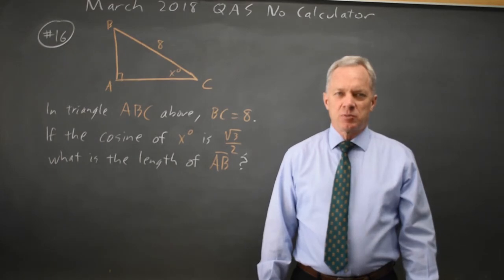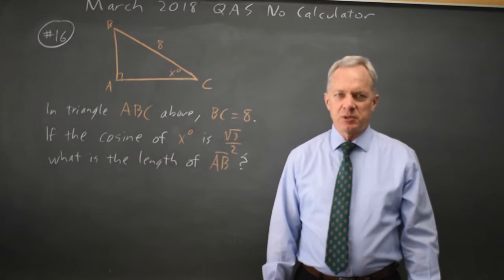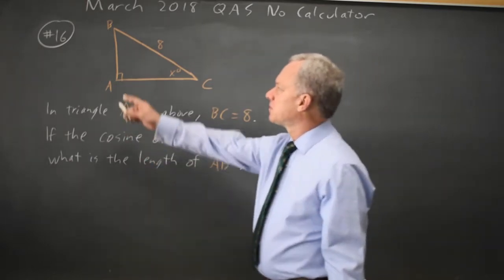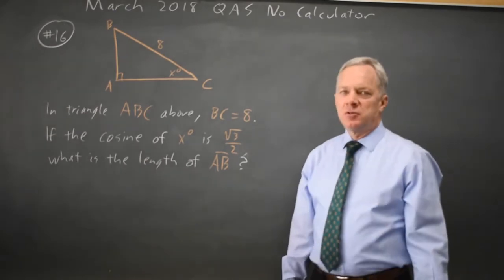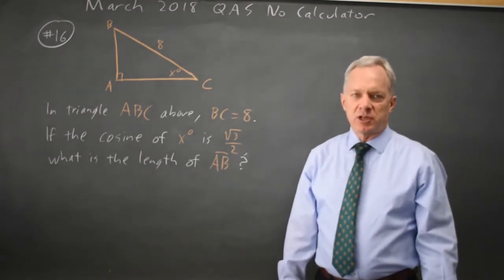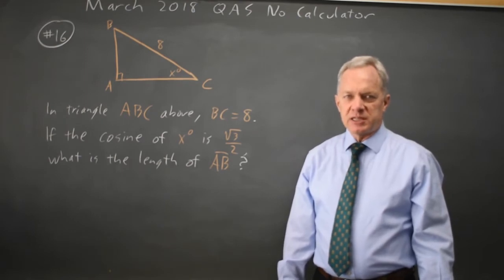This is question 16. College Board gives us the cosine of angle X and the length of the hypotenuse and asks for the length of side AB in this triangle. We can use the special right triangles provided in the start of each math section.